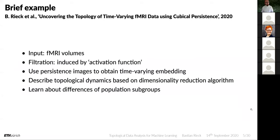A brief example uses a cubical setting that goes beyond the simplicial setting, using an fMRI volume as input. The filtration is induced by the activation function — the BOLD function of the fMRI data. We use persistence images to obtain a time-varying embedding, because every subject had a time series of fMRI measurements of the same length. We could then describe the topological dynamics based on a dimensionality reduction algorithm.